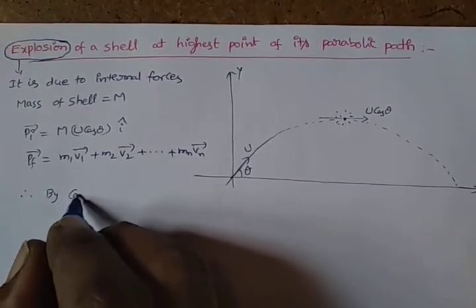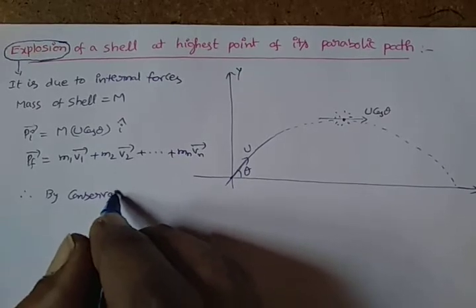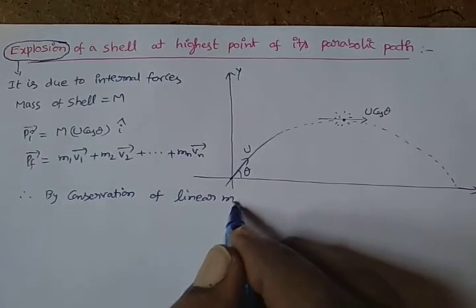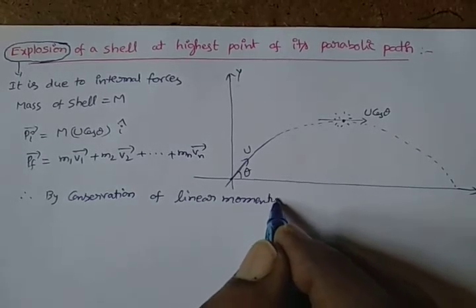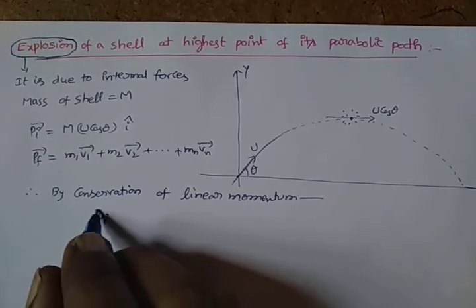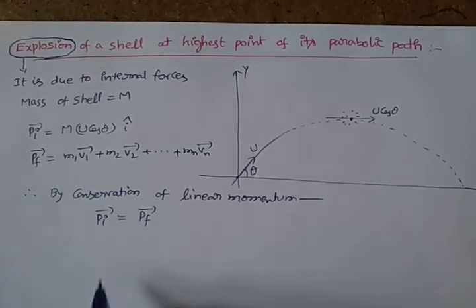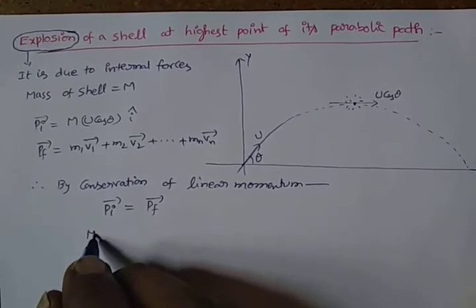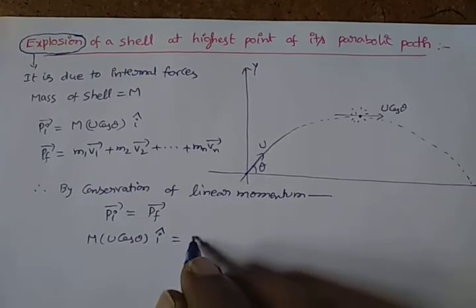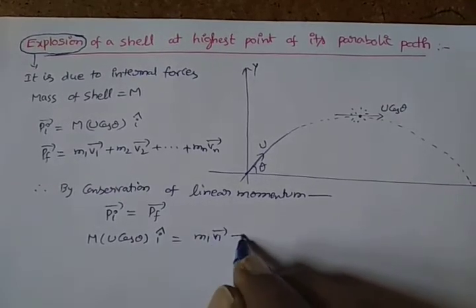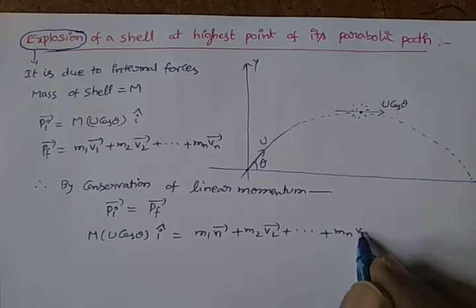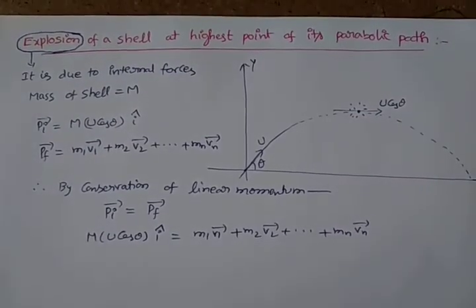By conservation of linear momentum, the initial momentum before explosion is equal to the final momentum after explosion. That is, M into U cos theta i-cap is equal to M1V1 plus M2V2 plus and so on plus MnVn.